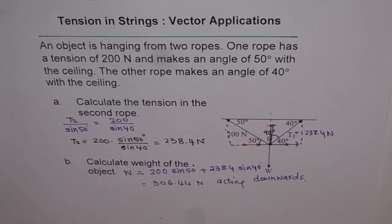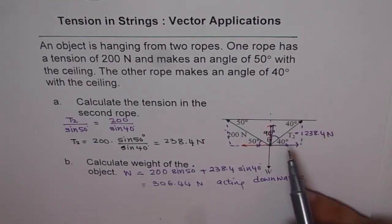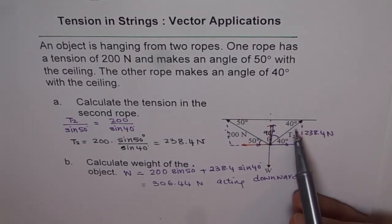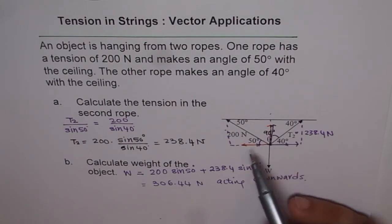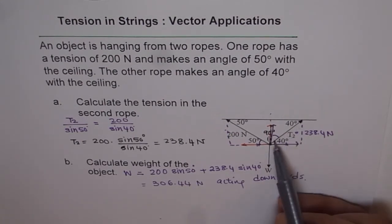That is how we can find the weight of the object in this particular case. I hope you understand how we have solved this question. Part one of the question is to find tension in the other string which we did using sine law. In part two, to find the weight, we figured out what should be the component of these tensions, upward component.